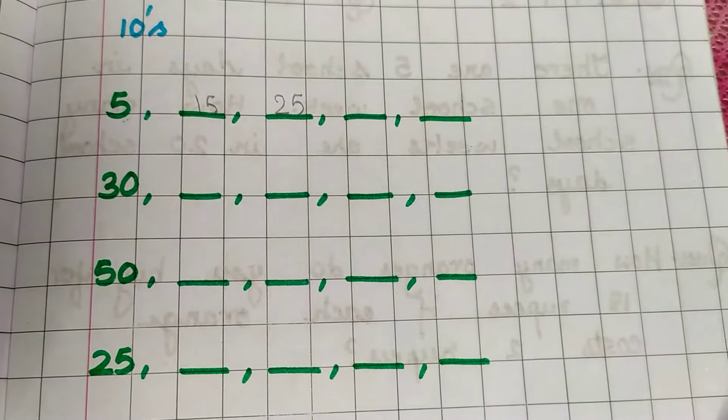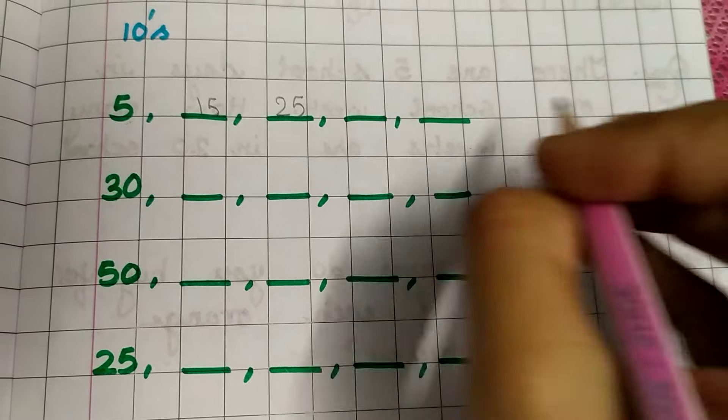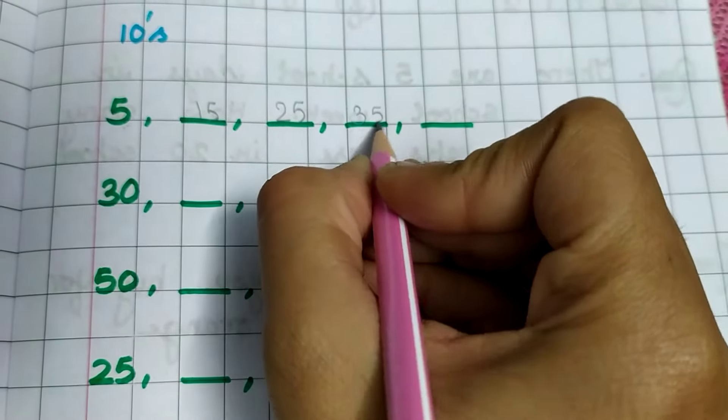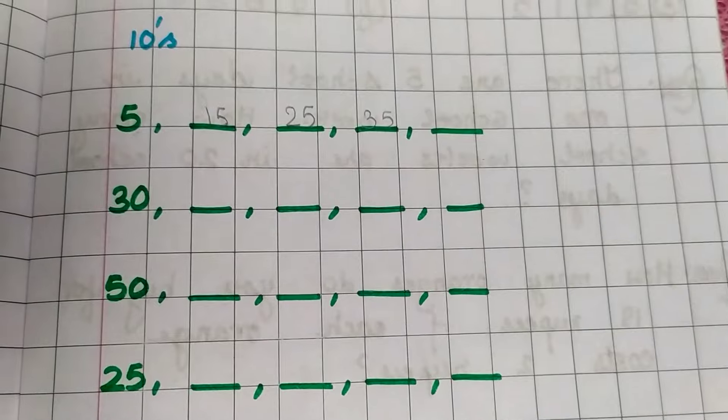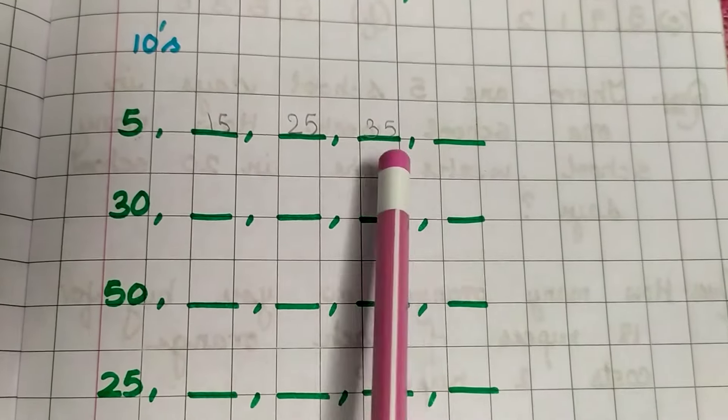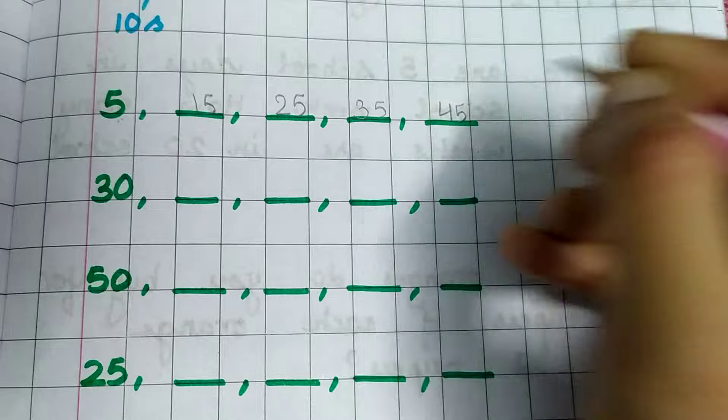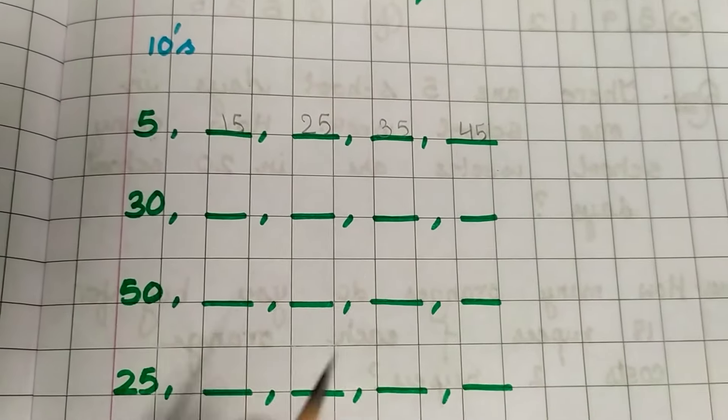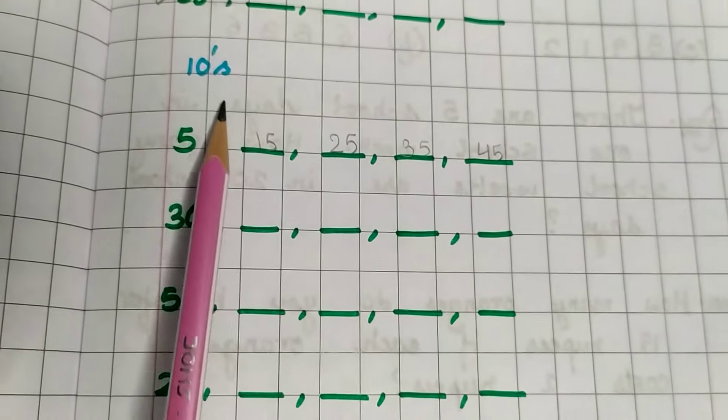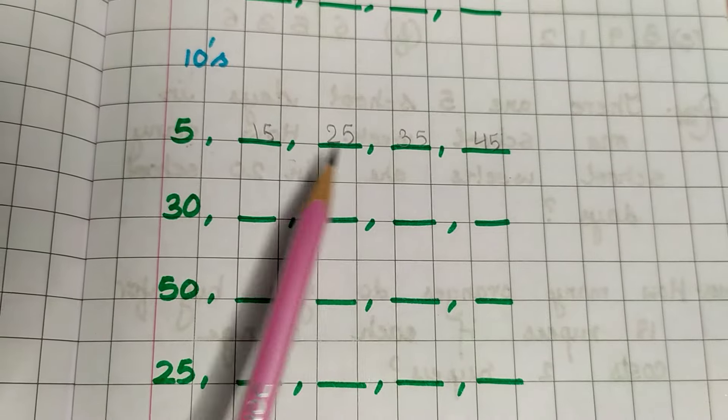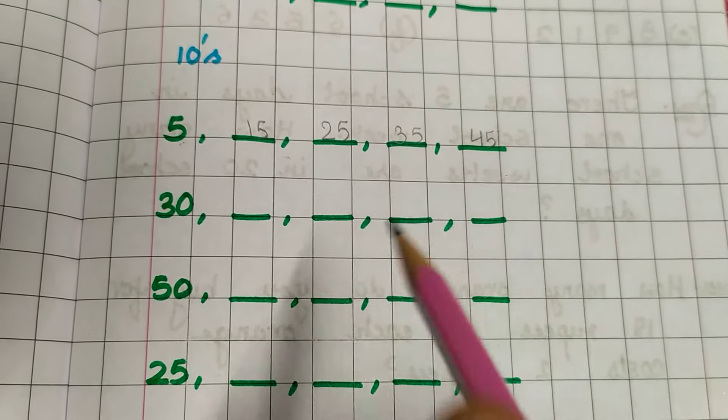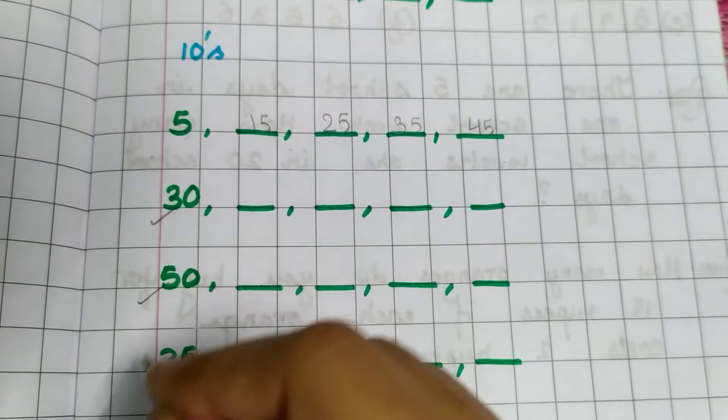Add 10 to 25: 25 plus 10 is 35. Add 10 to 35: 35 plus 10 is 45. In skip counting by 10's, add 10 at each step. Now similarly do these three parts.